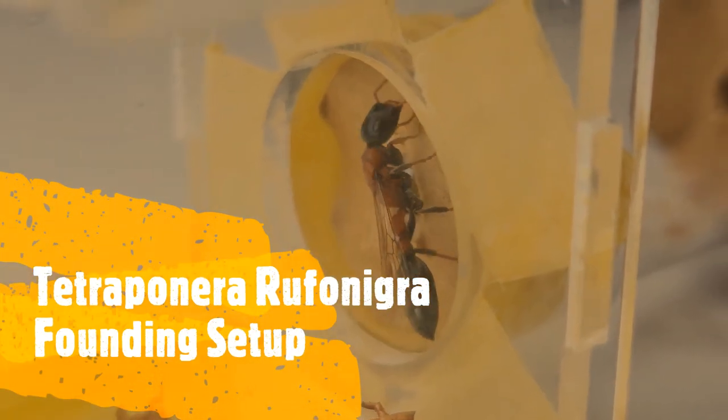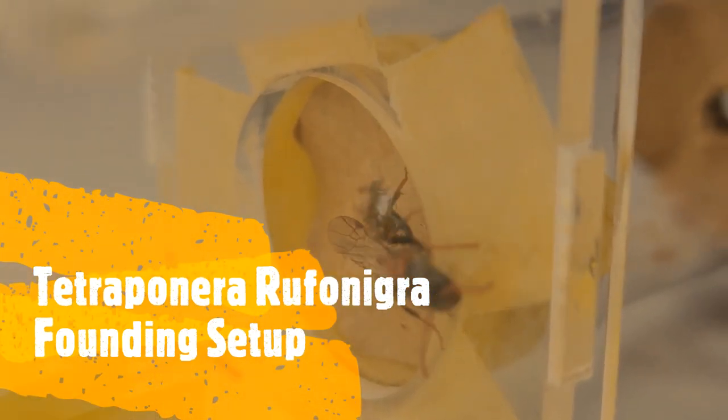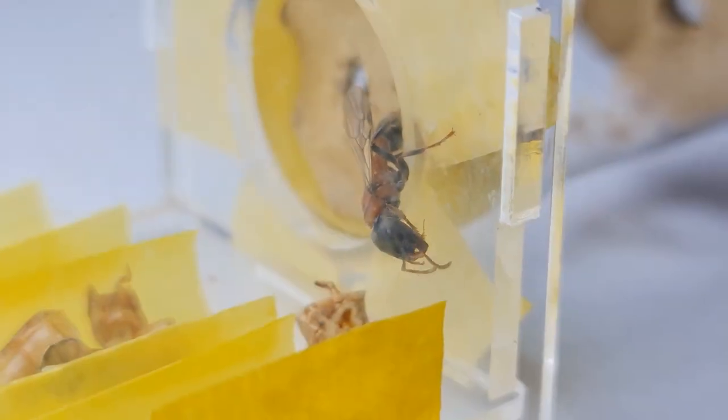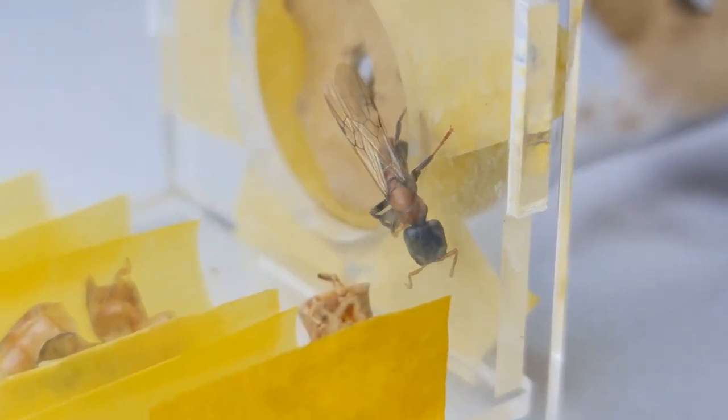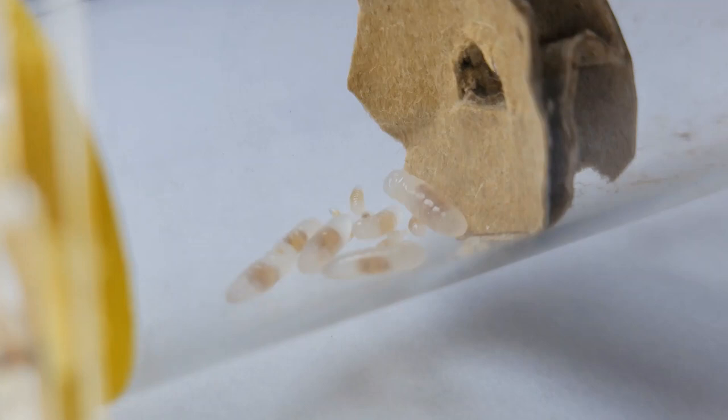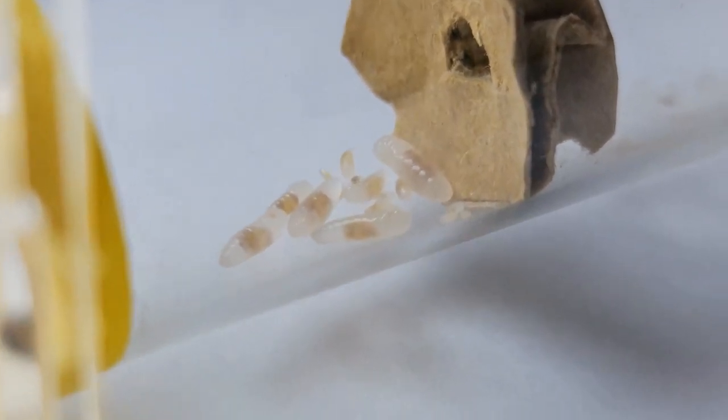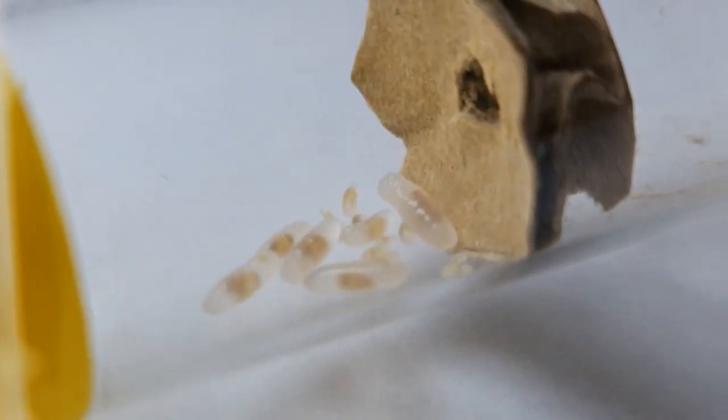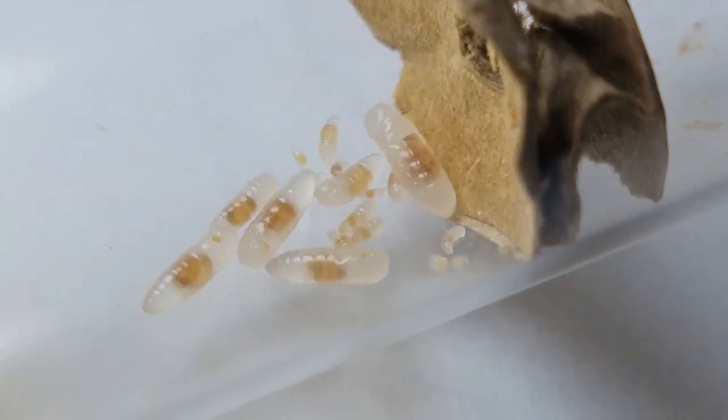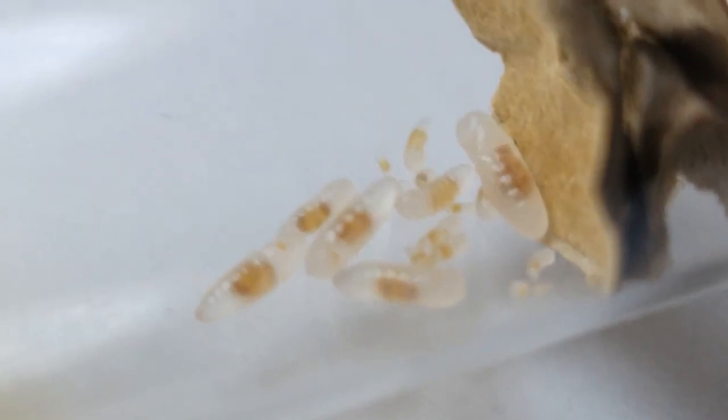Hi fellow ant keepers, and welcome back to the Ants Suban YouTube channel. Today, we will be looking at how to make a Tetraponera Rufa Nigra founding queen setup. I know some of you have been waiting for this video release. I apologize that it took three-part video to get to this point, like I said in part one that it was going to be a series of video. This will be the final video on the founding stages of our Tetraponera Rufa Nigra colony.